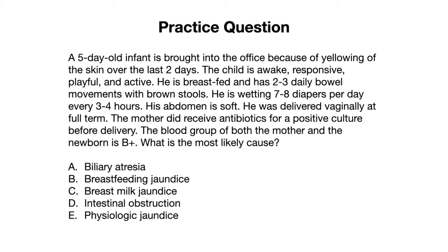Breast milk jaundice would be on the differential but typically presents after one week, so it doesn't fit the time frame. An intestinal obstruction would be more likely if the baby's abdomen was not soft, or if the baby appeared to have pathologic jaundice — meaning jaundice within the first 24 hours.